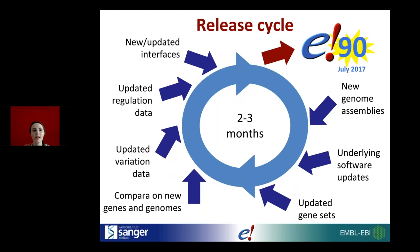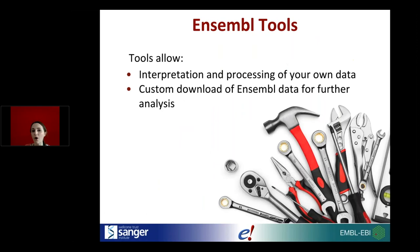The reason we release everything in one go is that it makes everything traceable — you can always go back to previous releases and find old data. While the main Ensembl browser is all point-and-click for finding information about a single gene or variant, the tools allow further access to data, interpretation and processing of your own data, and custom download of Ensembl data for further analysis.